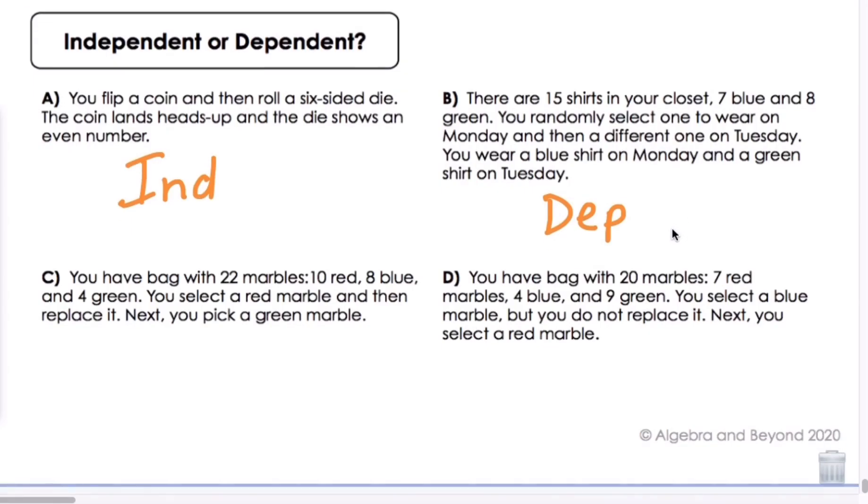Letter C. You have a bag with 22 marbles, 10 red, 8 blue, and 4 green. You select a red marble and then replace it, and next you pick a green marble. Well, because we replaced the red marble that we had originally picked, the next time you're going to pick is not going to be affected by that. We're replacing it, so anytime you see replace, these are going to end up being independent events of each other.